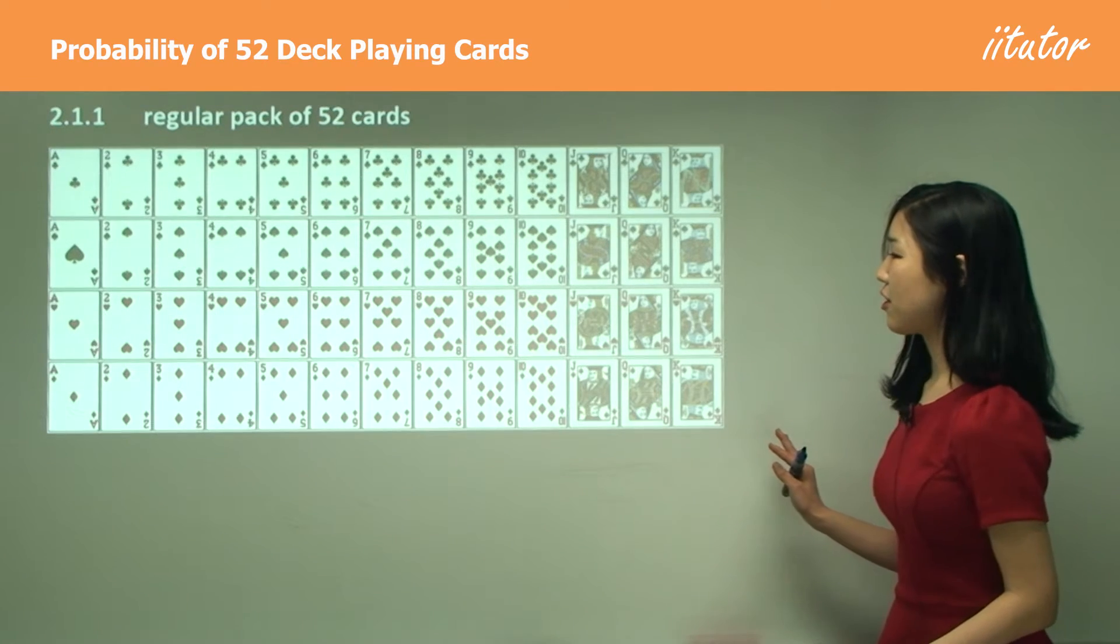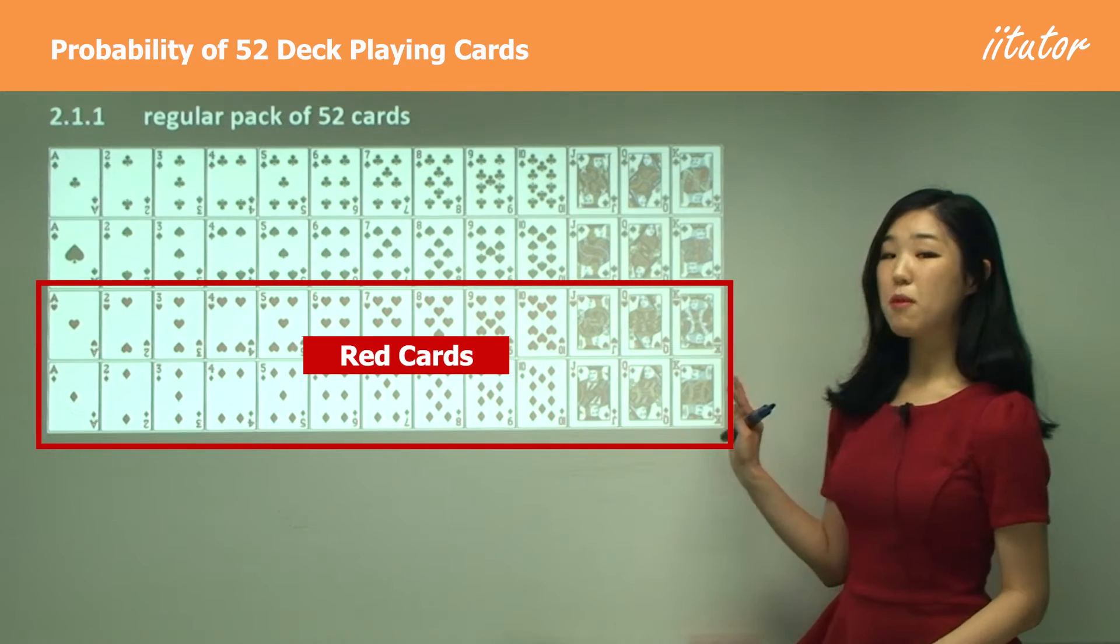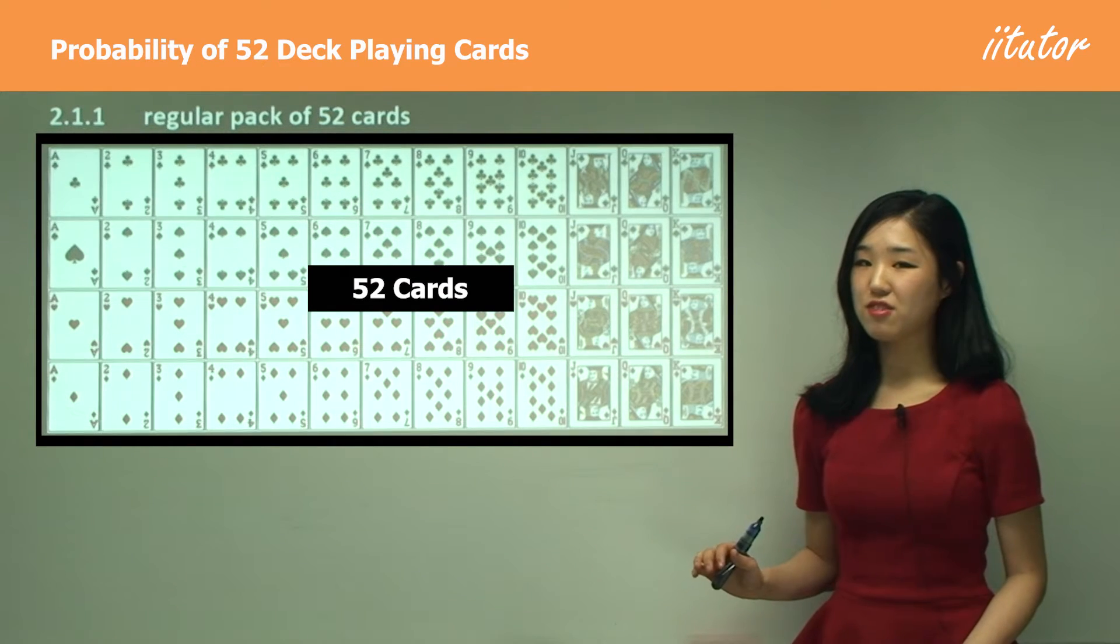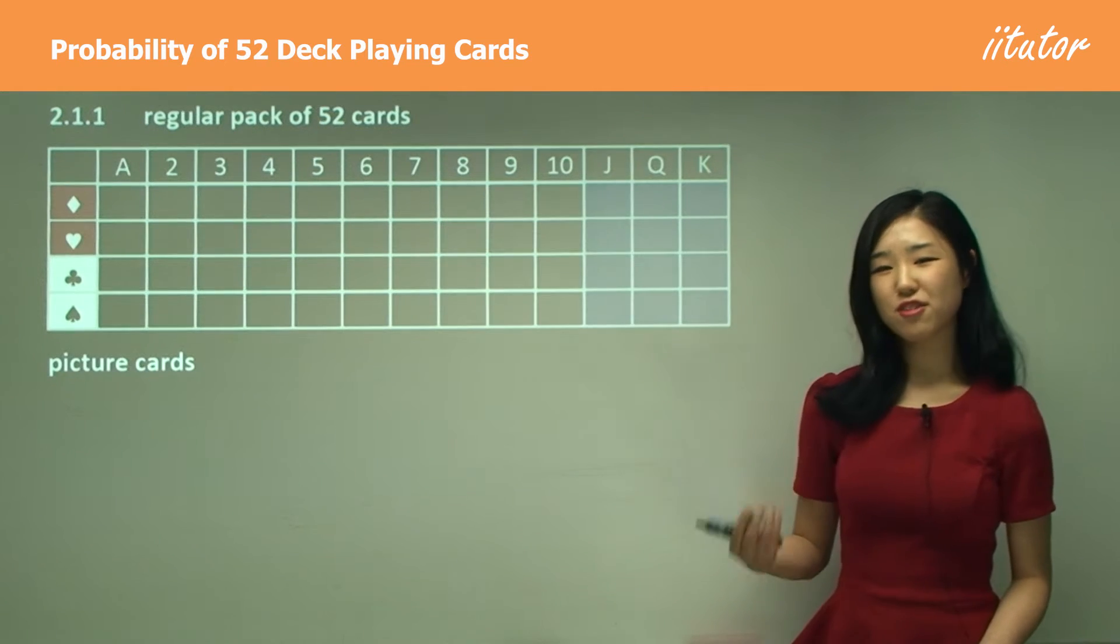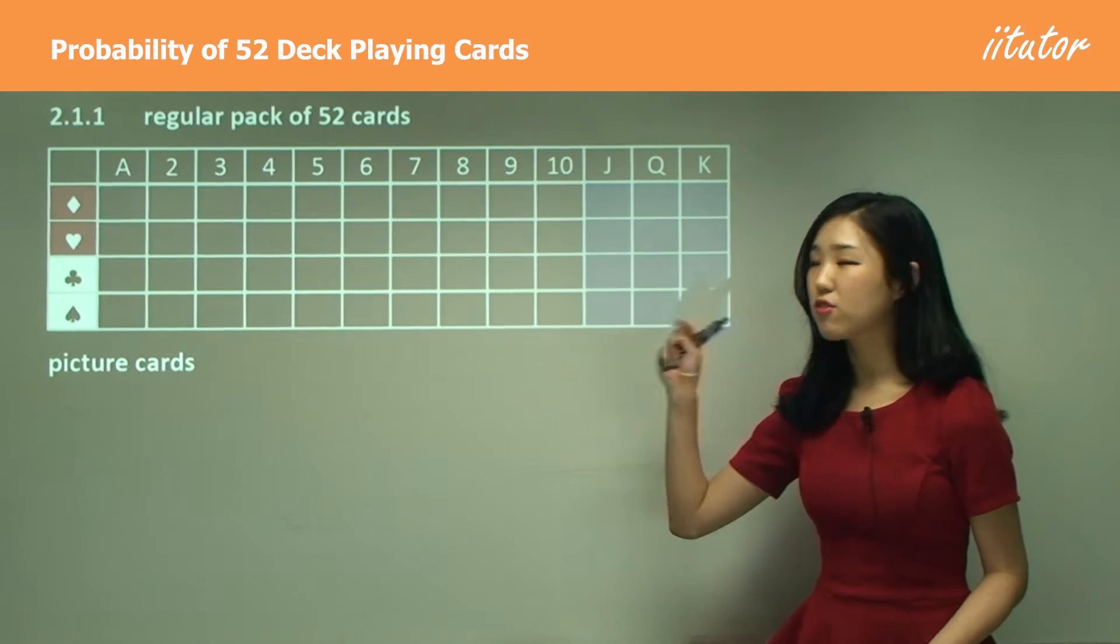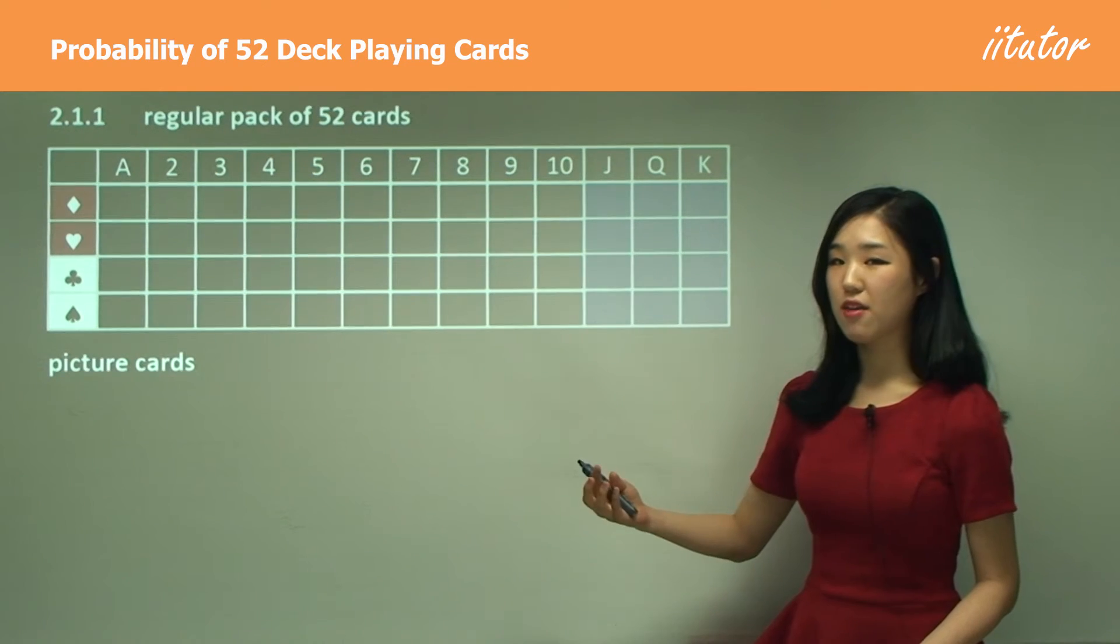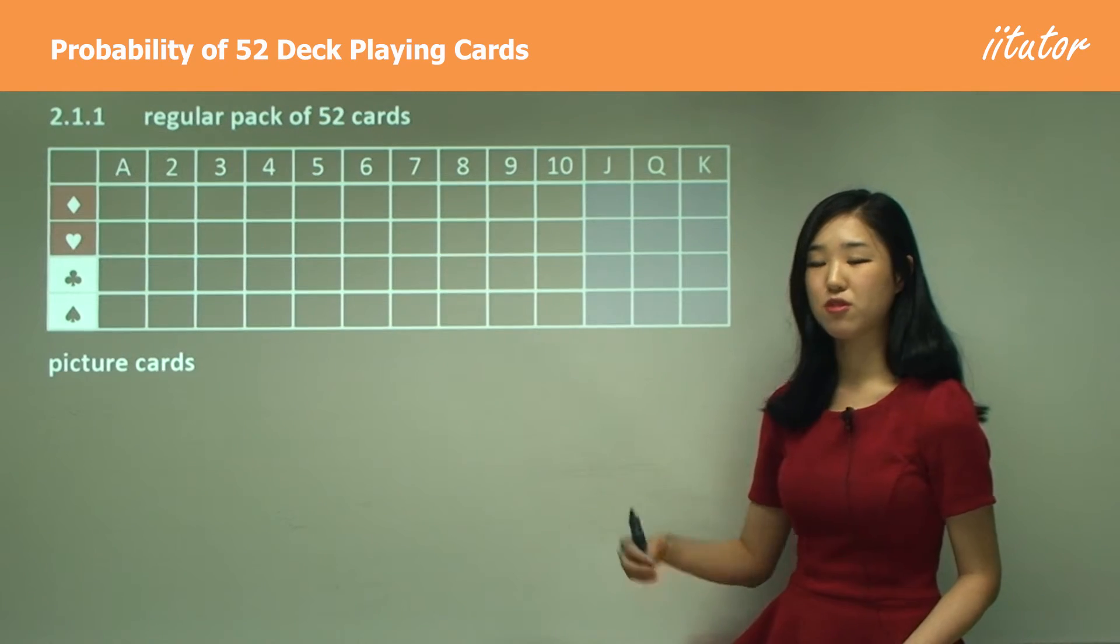You should also know there are black cards and red cards. If you count them up, you can see there's 52 cards in total, so you must remember that number—52. With these card questions, I do recommend for you to draw up this table at the beginning of the question and then just relate to this table whenever you answer a question.